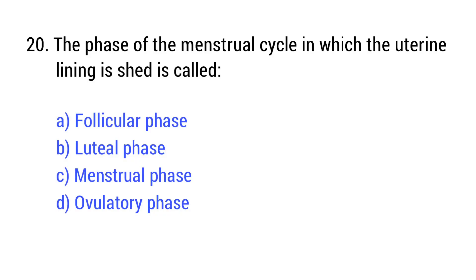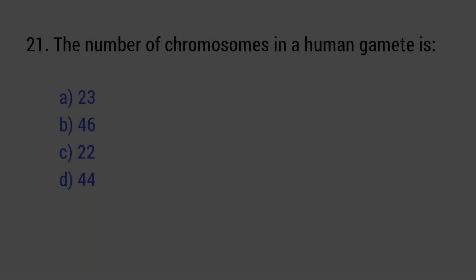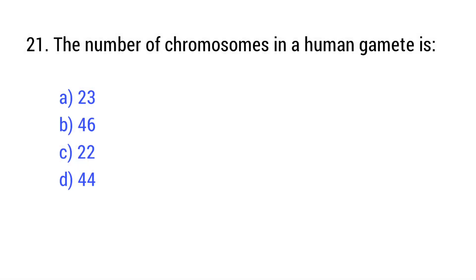Question number 20. The phase of the menstrual cycle in which the uterine lining is shed is called? The right answer is option C: Acrosome. Question number 21. The number of chromosomes in a human gamete is? The right answer is option A: 23.